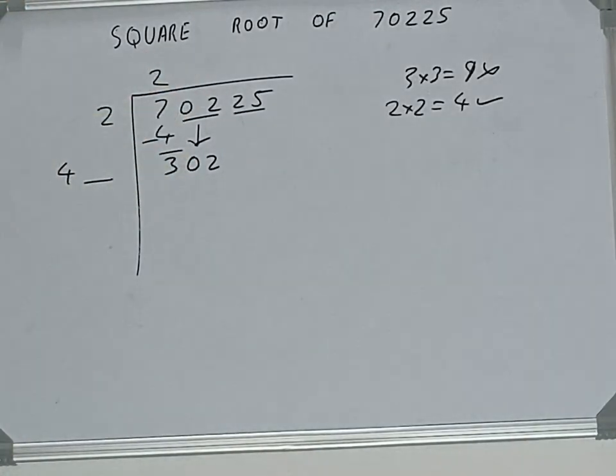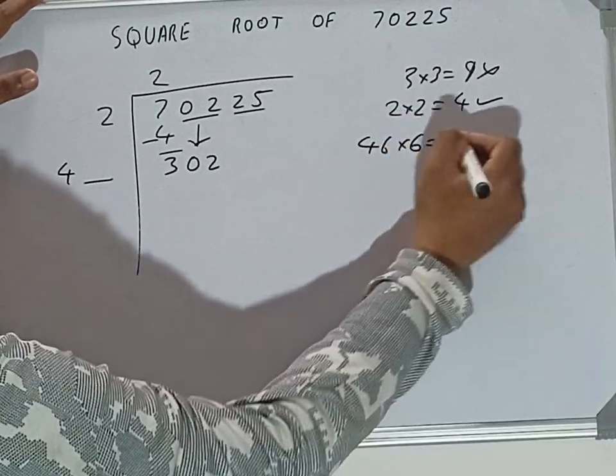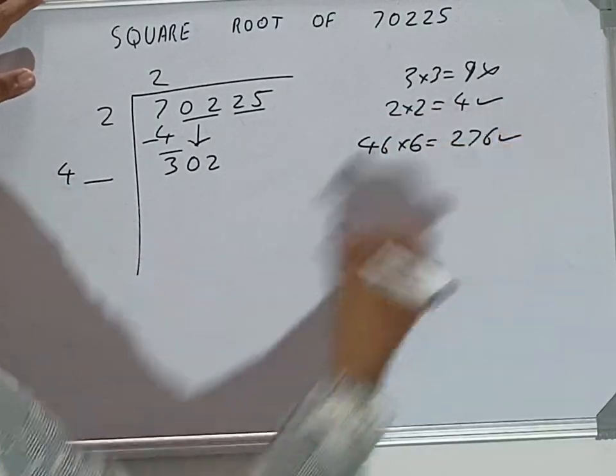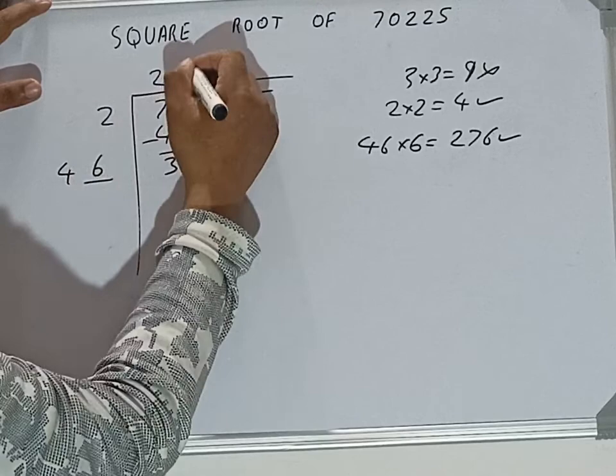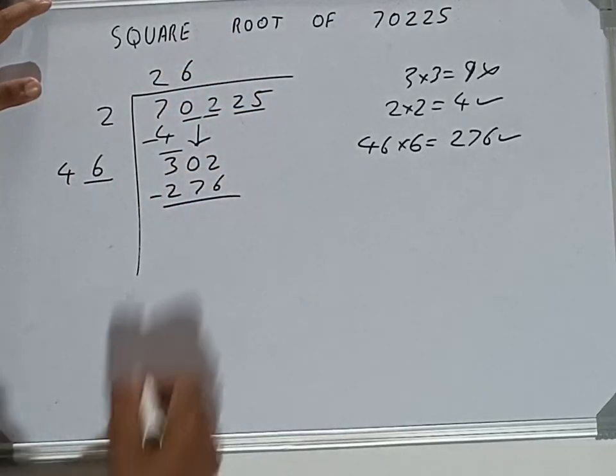Now whatever number we write here, we need to write here also. So if we try six times, that is 46 into six will be 276, which is good to take. So six, six here and six here: 276. Subtract and 26 will be left.